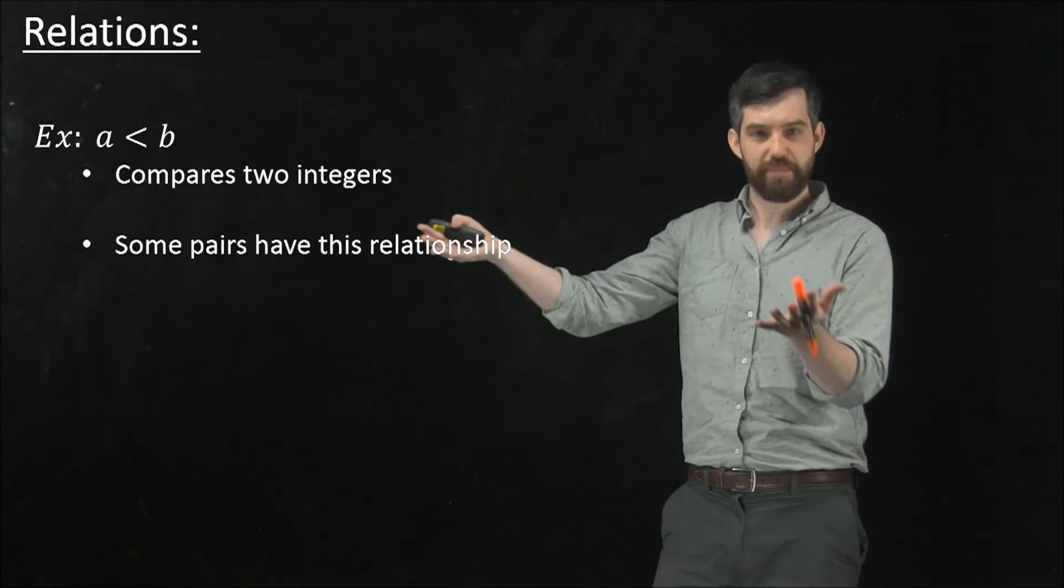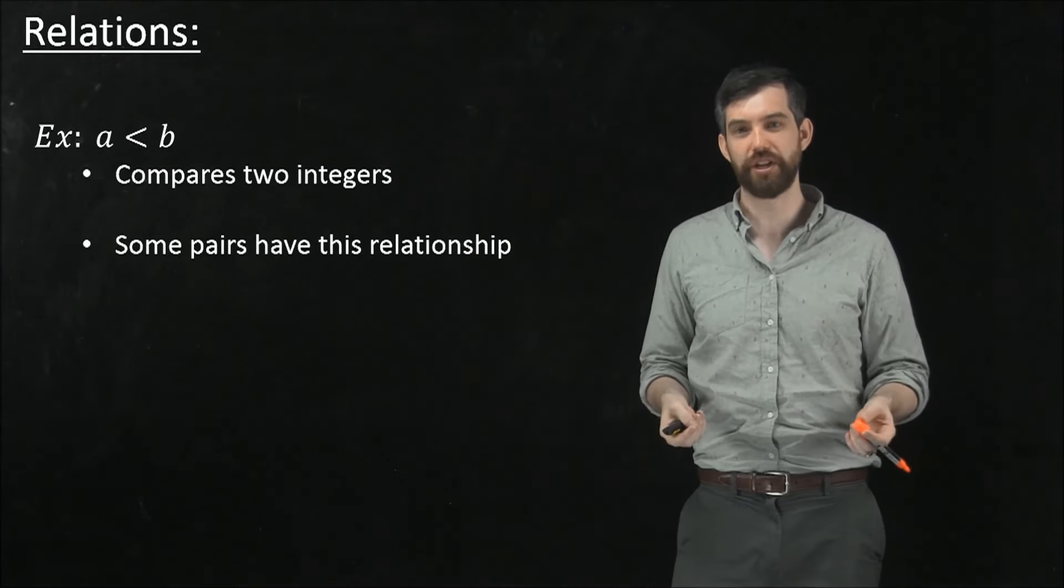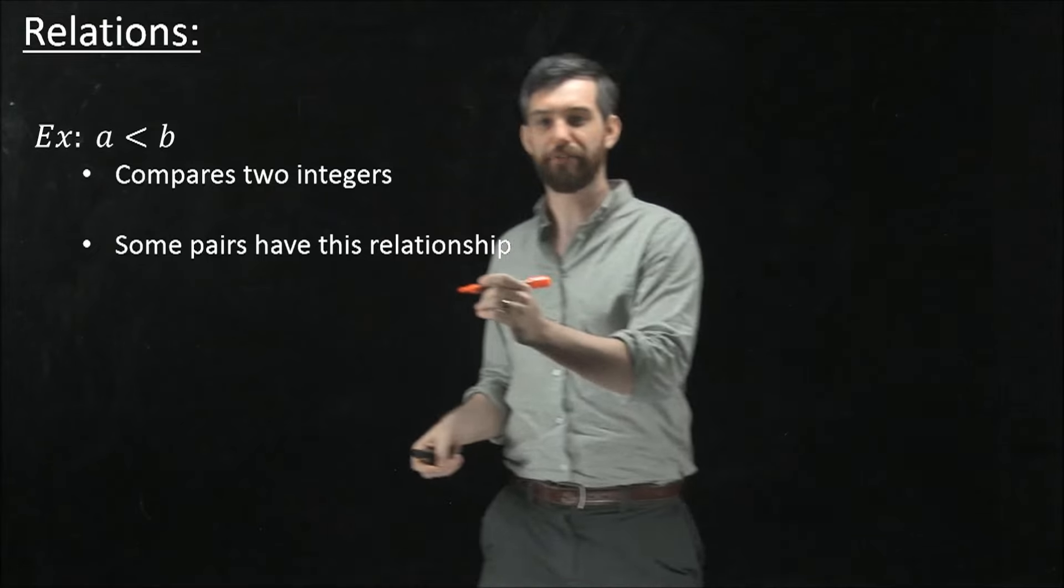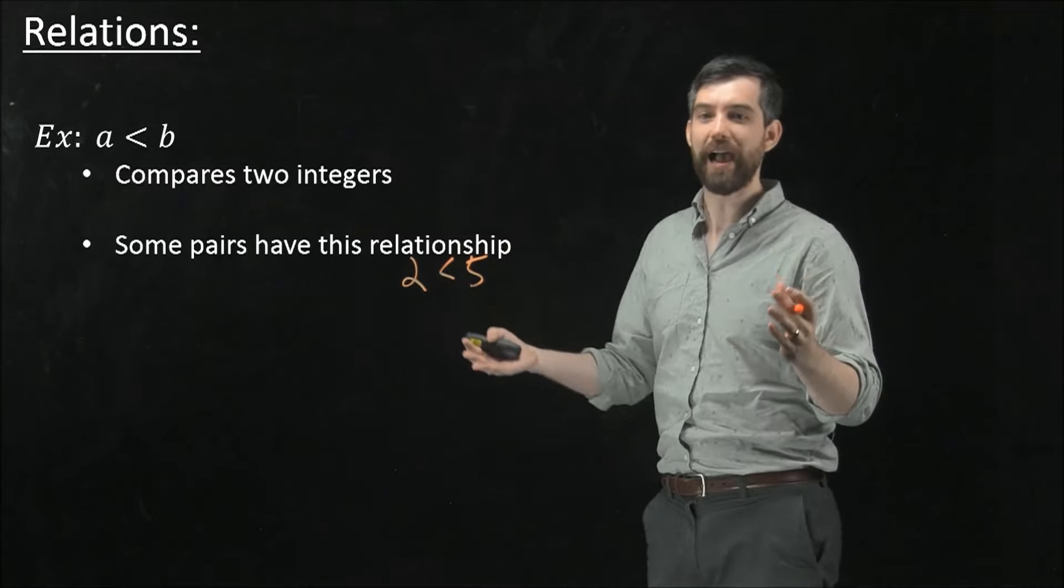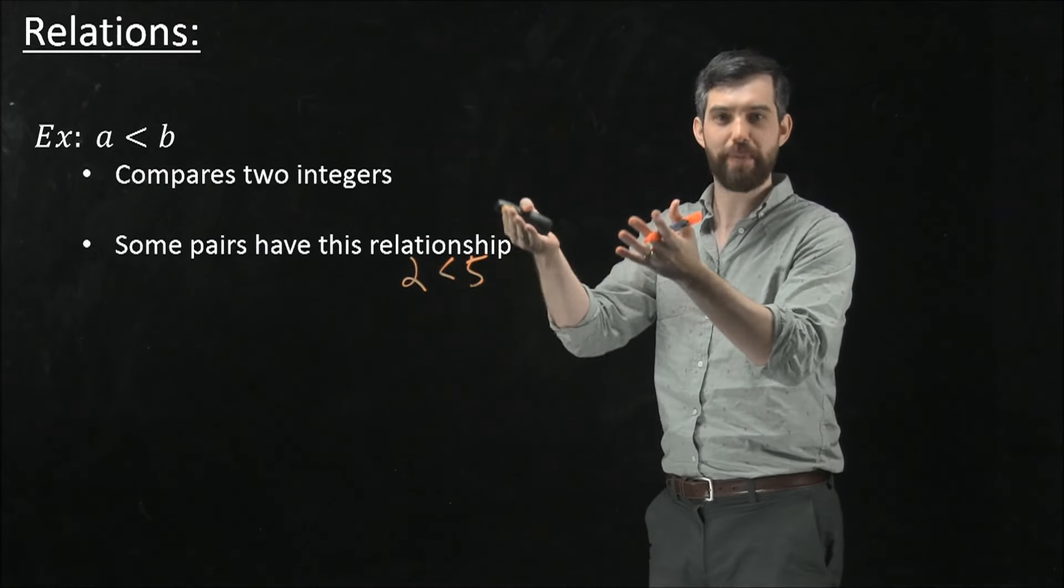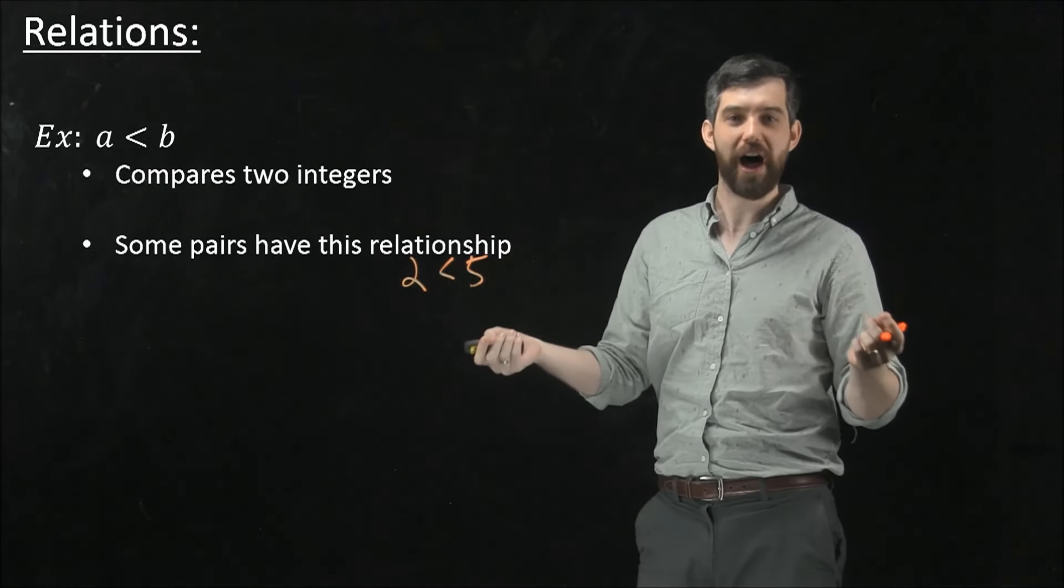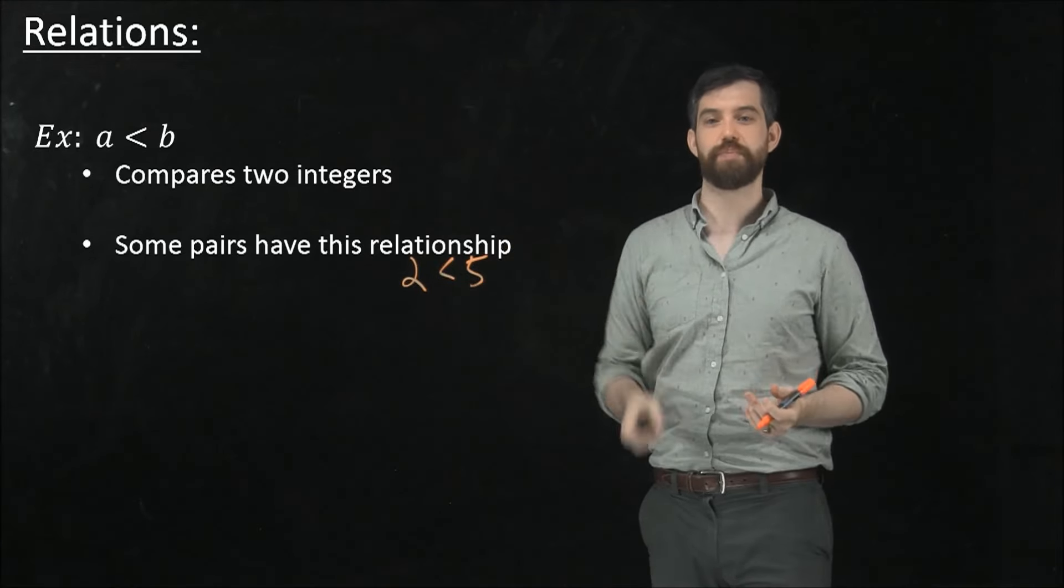Now some of the pairs of integers that you can imagine have this relationship. Like for instance, it is true that two is less than five. This is a true fact, and this particular pairing, two comma five, that ordered pair, has this particular relationship.